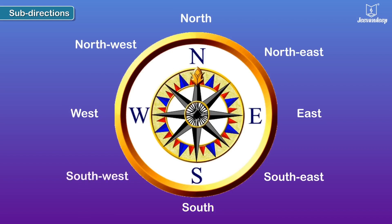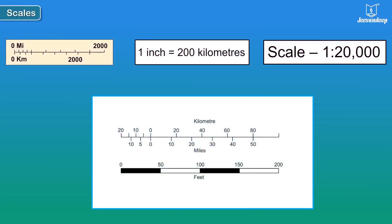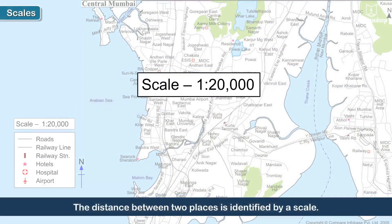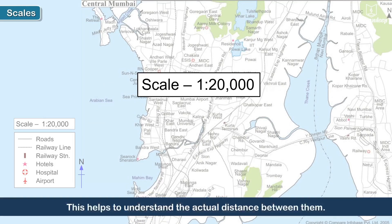A map is a smaller version of a place and distances have to be shrunk in order to fit on the limited space available. Therefore, the distance between two places is identified by a scale. This helps to understand the actual distance between them.